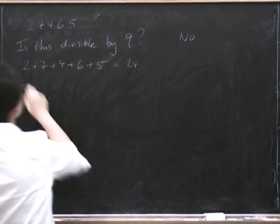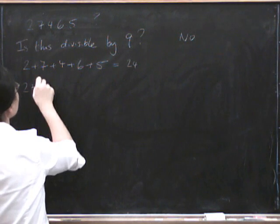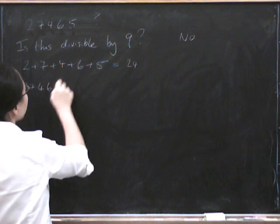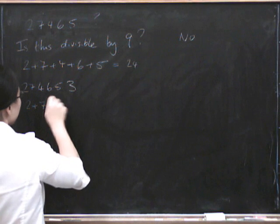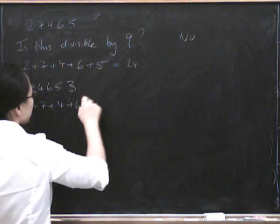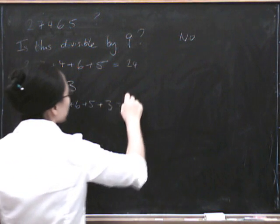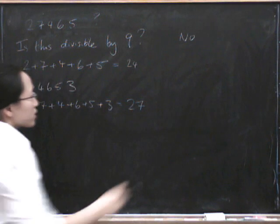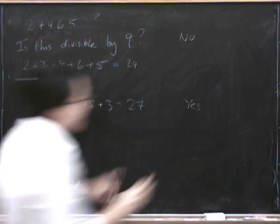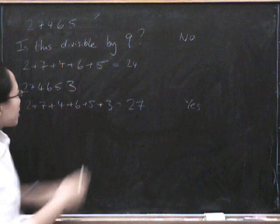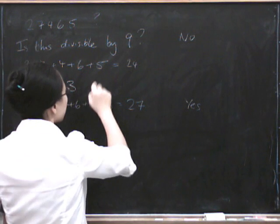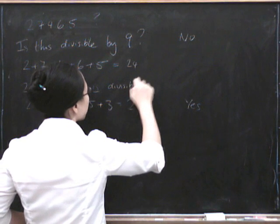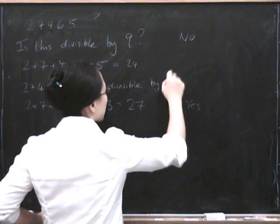But if I wrote down the number 2, 7, 4, 6, 5, 3, then the answer is going to be 2 plus 7 plus 4 plus 6 plus 5 plus 3 equals 27. 27 is divisible by 9, so we can conclude that this number is divisible by 9.